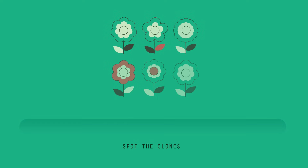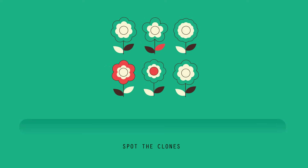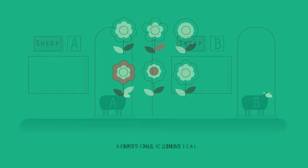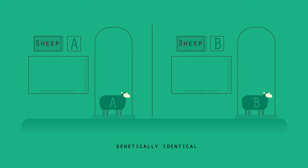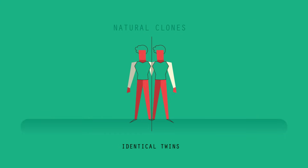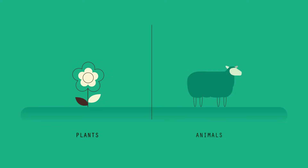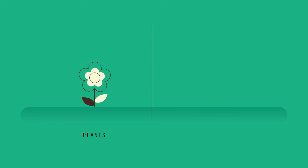Can you spot the two clones? When we talk about clones in science, we mean organisms that are identical copies. They have the same DNA as each other. Identical twins are examples of naturally occurring clones. Both plants and animals can be cloned.